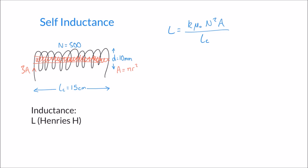The core material has what's called a relative permeability, and this affects the result. In this case let's say the iron core has a relative permeability of 515, so k equals 515. Let's see first how that affects the inductance, and then how it affects the energy build-up.